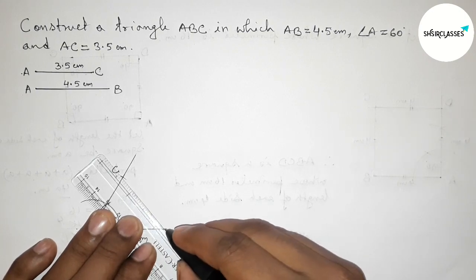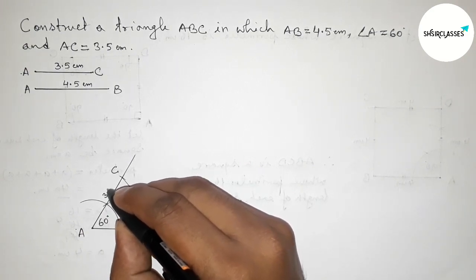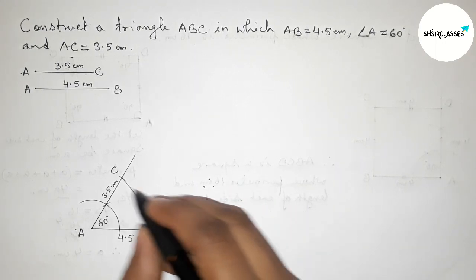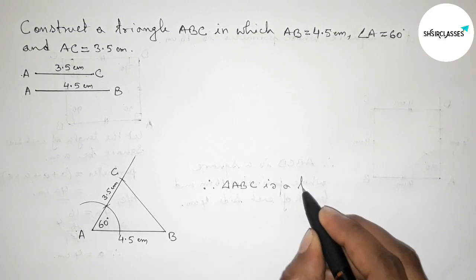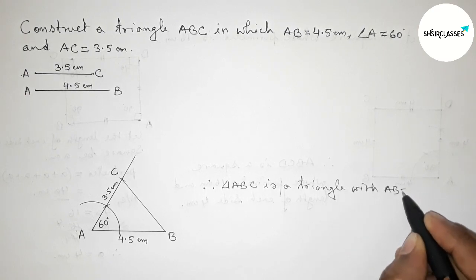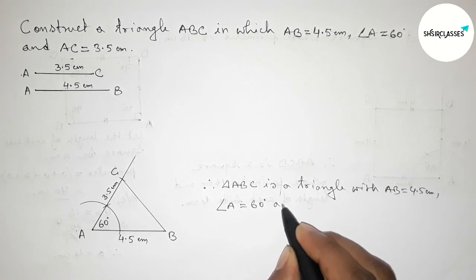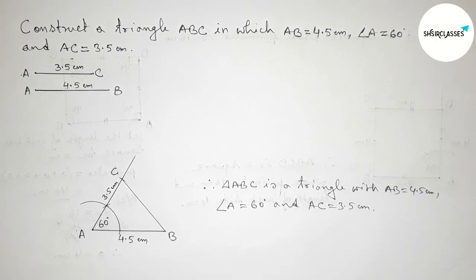Joining BC, and AC equals 3.5 centimeters. Therefore, triangle ABC is constructed with side AB equals 4.5 centimeters, angle A equals 60 degrees, and AC equals 3.5 centimeters. That's all — thanks for watching. If this video is helpful to you, please share it.